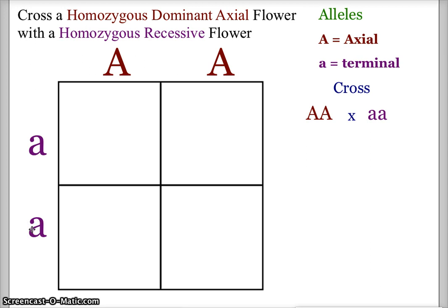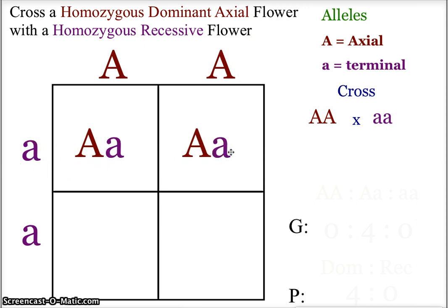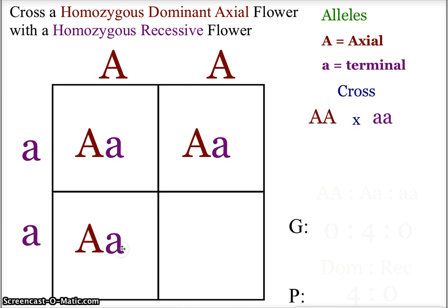Now we perform the actual cross, working with the segregated alleles. For the first possible offspring we take the first allele from the first parent and the first allele from the second parent, getting a heterozygous offspring. We then take the second allele from the first parent and the first allele from the second parent, getting another heterozygous offspring. Remember, these are only possible offspring — we won't have exactly four offspring every time. We're just pairing up the letters like a multiplication table.